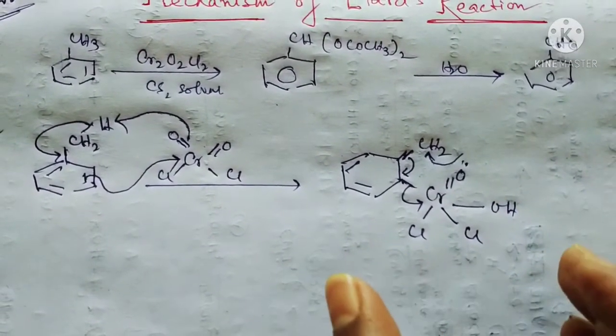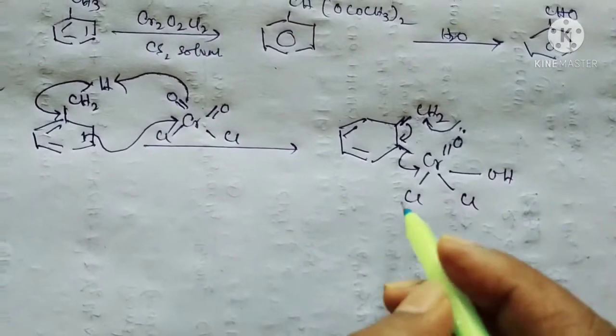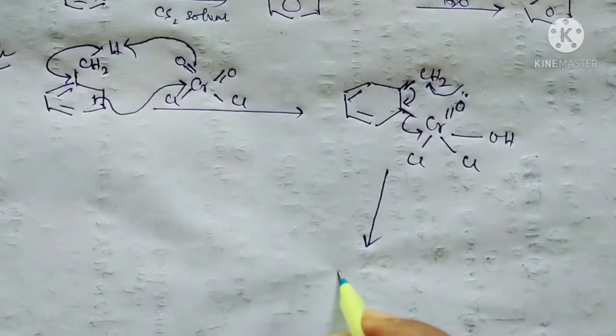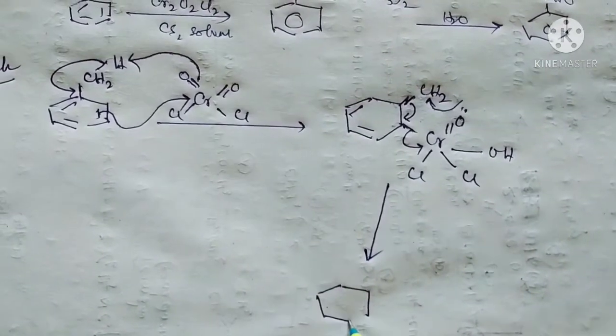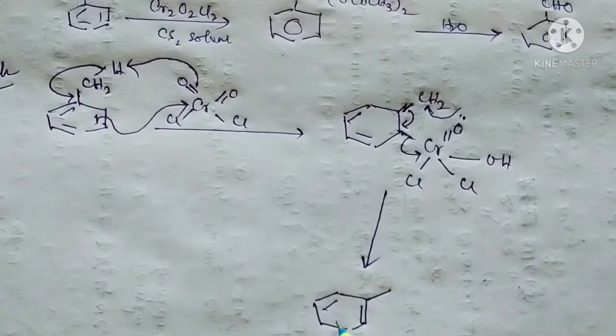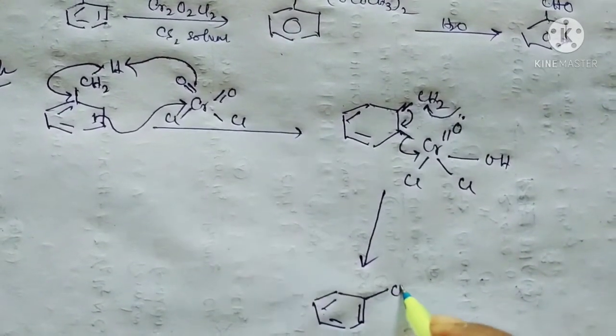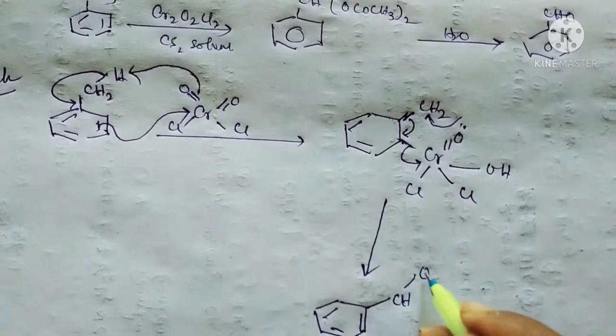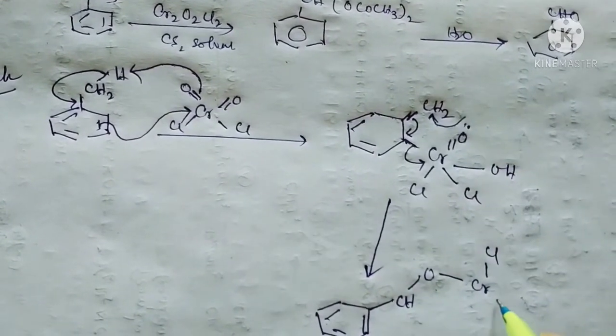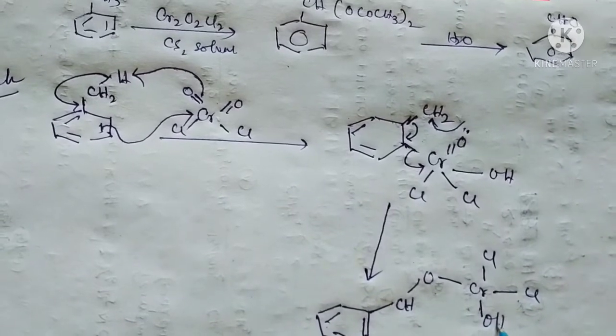This is the CH2 chromium, this is one of the chlorines, this is another chlorine, this is the OH, and here is the hydrogen.